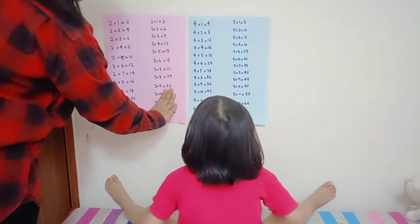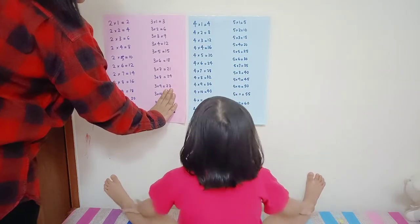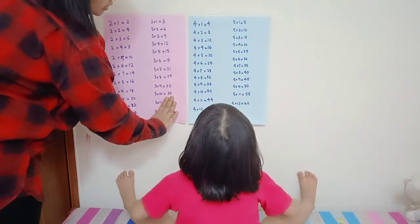Three times ten... twenty-seven? Three times ten, three times eleven, three times twelve.